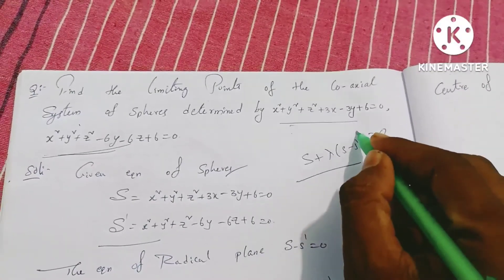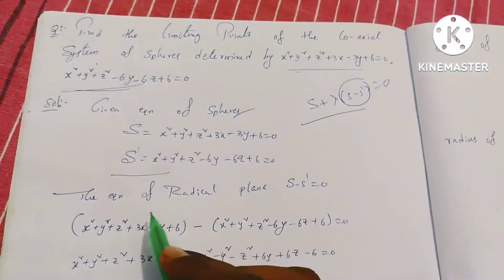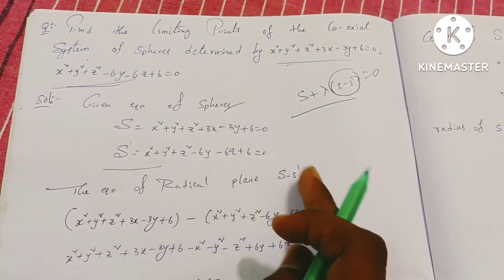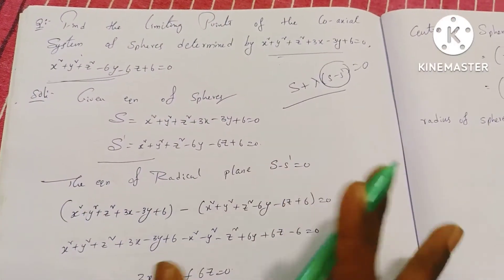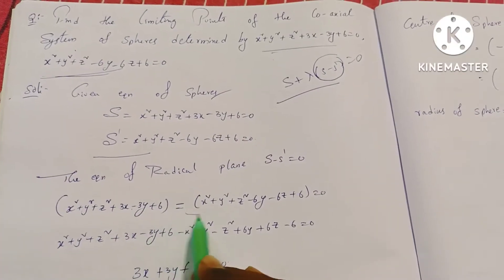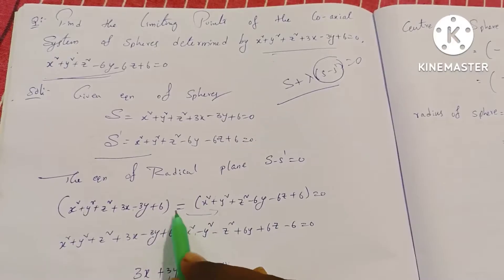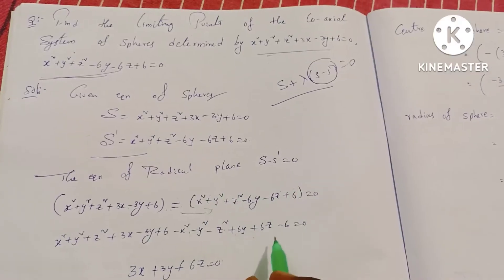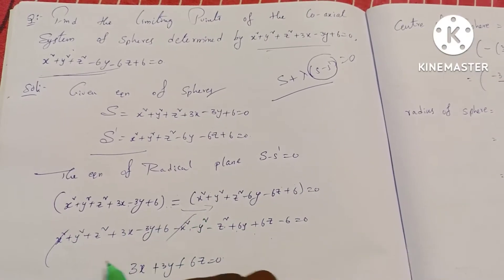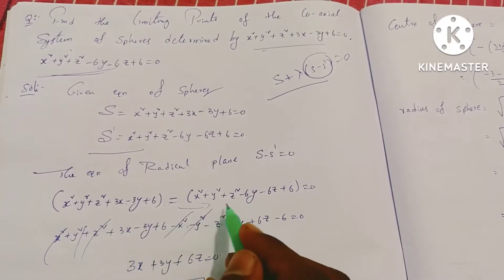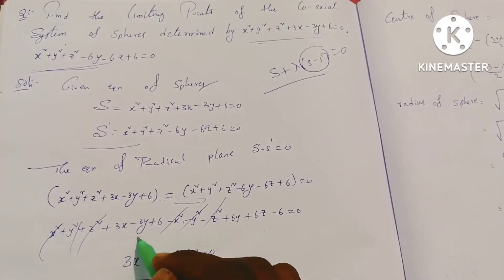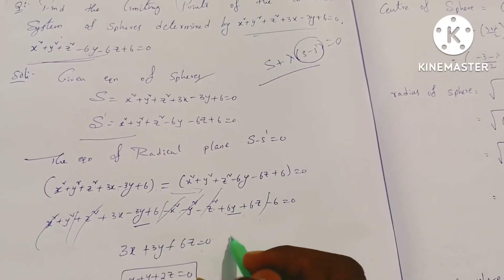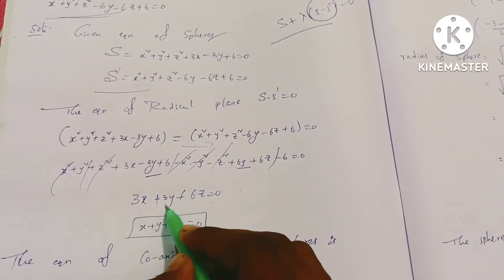The first plane is S minus S dash. Therefore, the equation of the radical plane is S minus S dash equals zero. Subtracting the first equation from the second equation, we get: minus x squared minus y squared minus z squared terms cancel, and simplifying gives 3x minus 3y plus 6y plus 3y and 6z equal to zero. x squared, y squared, z squared terms cancel, giving x plus y plus 2z equals zero.